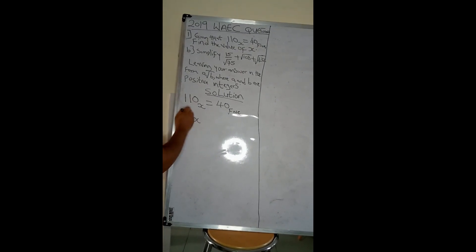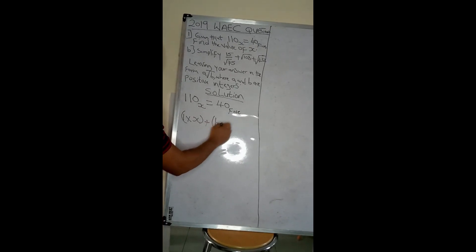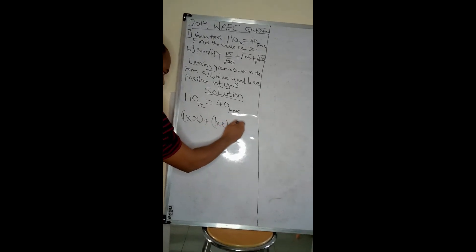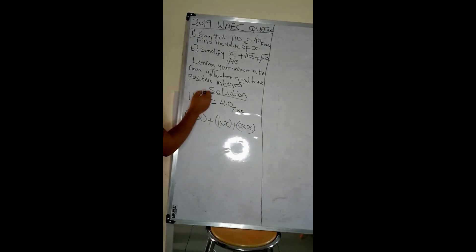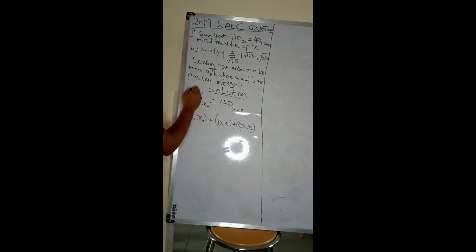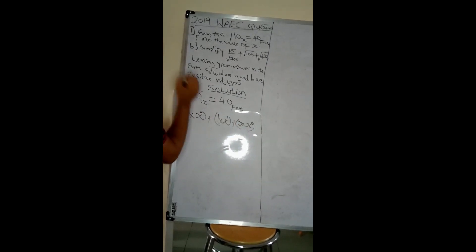This is 1 times x plus 1 times x plus 0 times x. Now let's introduce our powers. Remember, you start from the right: power 0, 1, 2. So this will take power 0, this will take power 1, this will take power 2.